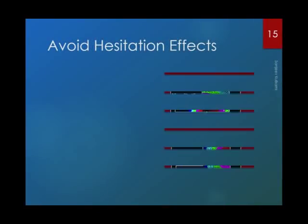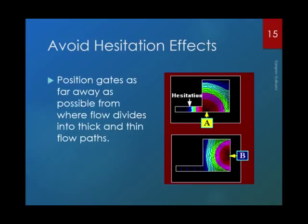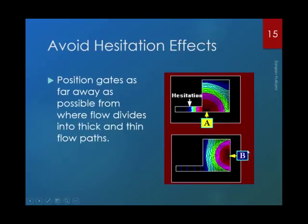The next principle: avoid hesitation effects. This situation occurs in most cases where, due to packaging requirements, wall thicknesses change at certain regions — thick sections follow thin sections or vice versa. If you provide a gate at the junction of a thick and thin section, the thick section starts filling first and there is heavy hesitation — the polymer melt hesitates to flow into the thinner section. This should be avoided. If you can provide a gate location at the thick section, it will fill easily and you will get a uniform pattern. This principle should always be kept in mind while deciding gate location.